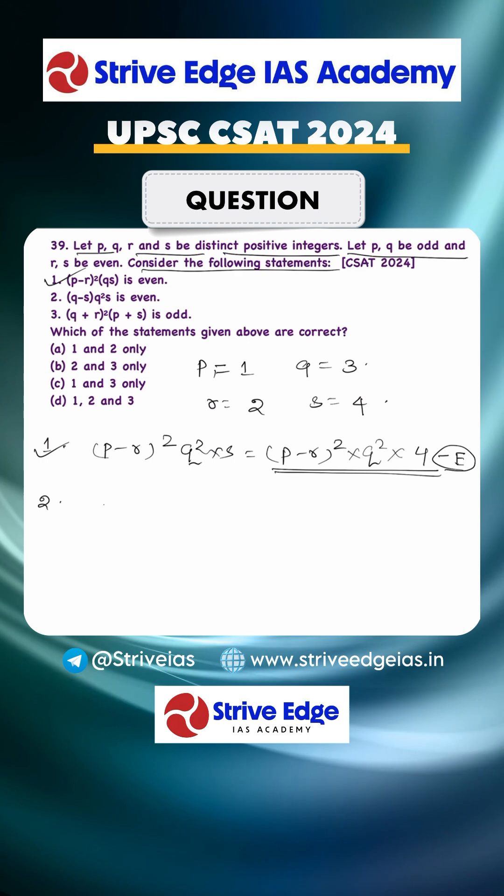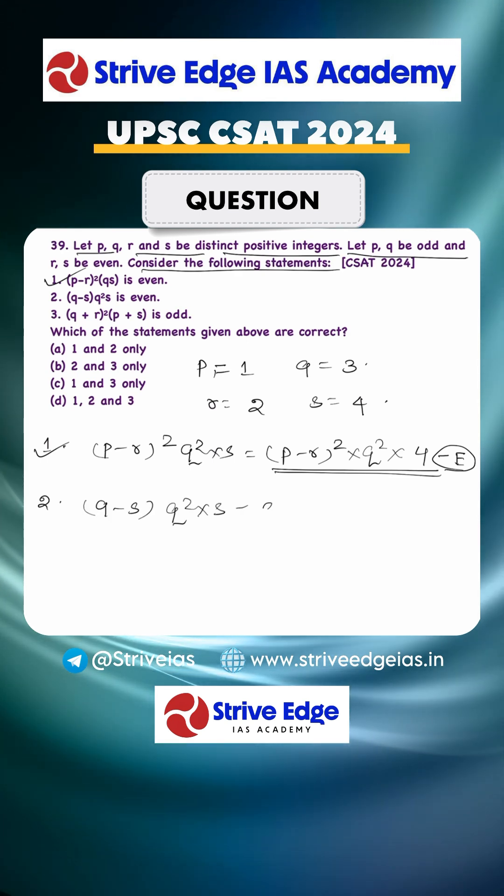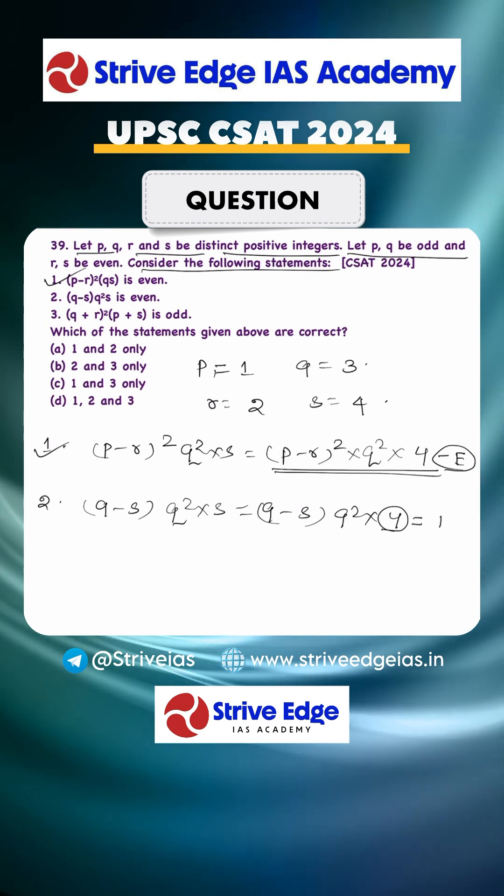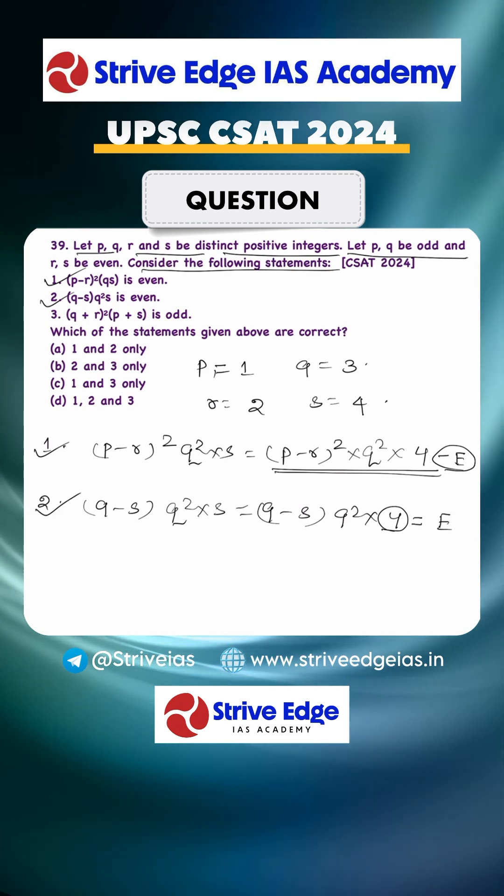We will check the second condition. Q minus S into Q square into S. Just put the value. We will keep as it is S and Q square into S is 4. Multiplication of any even number makes the whole number even. So this is also even. Second condition is correct, it is also satisfying.